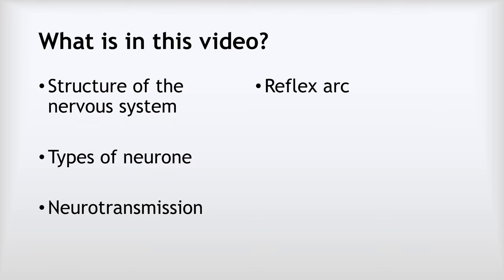In this video, we are going to be looking at the overall structure of the nervous system. Then we'll look at the different types of neurons — all three nerve cells. Then neurotransmission, which is how the nerve impulse goes from one nerve cell to another. And finally, we'll be looking at the reflex arc, which lets you respond quickly to danger.